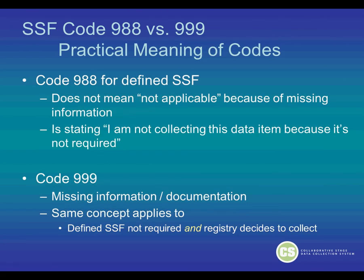The practical meaning of these codes: Code 988 for a defined Site-Specific Factor does not mean 'not applicable because of missing information.' It's really stating, 'I am not collecting this data item because it's not required.' Code 999 means there's missing information or documentation. The same concept applies to a defined Site-Specific Factor that is not required but the registry decides to collect it.